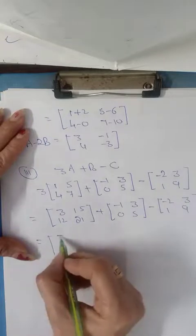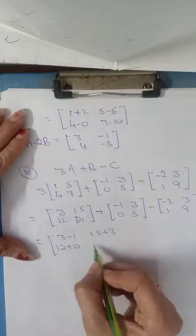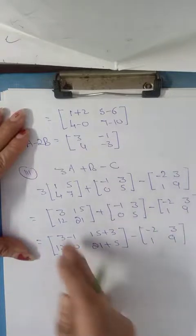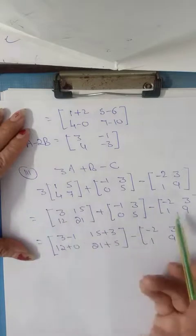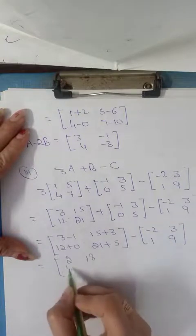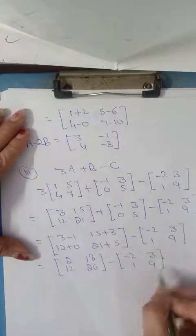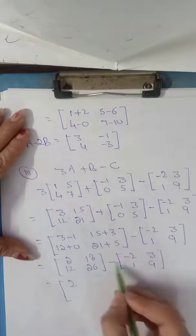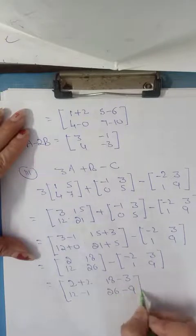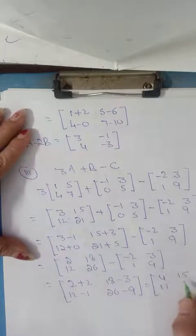So first we will add them. It is 3 minus 1, 15 plus 3, 12 plus 0, 21 plus 5, minus -2, 3, 1, 9. This step is one by one. We have 2, 18, 12, 26, minus -2, 3, 1, 9. Now we have 2 minus -2 equals 4, 18 minus 3 equals 15, 12 minus 1 equals 11, 26 minus 9 equals 17. So this is 3A plus B minus C.